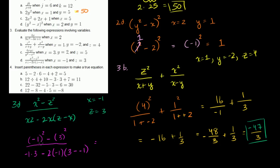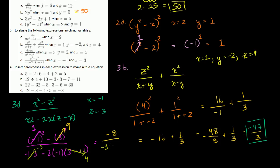Doing exponents first: negative 1 squared is positive 1, and 3 squared is 9. So the numerator is 1 minus 9, which is negative 8. For the denominator: negative 1 times 3 is negative 3. Inside the parentheses, 3 minus negative 1 is 3 plus 1, which equals 4. So the denominator is negative 3 minus 2 times negative 1 times 4, which is negative 3 minus negative 8.